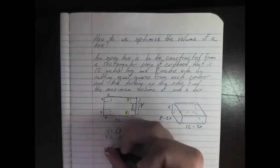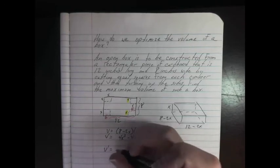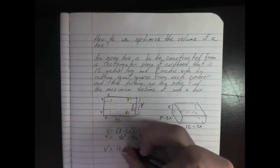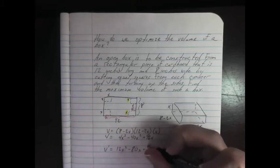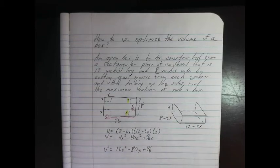Well, that means I need to find the first derivative, so that's just going to be 12x² minus 80x plus 96. I set this equal to 0, I solve, and I'm able to find my answer.